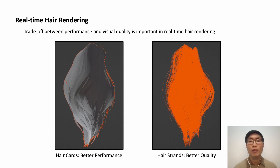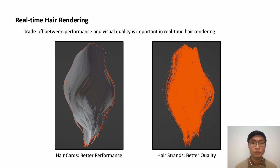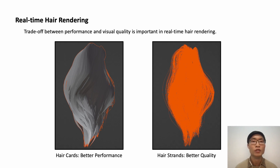Before introducing our methods, I would like to talk about some background information about real-time hair rendering. Decades ago, because of the limitation of GPU horsepower, hair is usually modeled as something called hair cards, which is basically a mesh-based structure, and it uses an opacity map to make it look like a collection of thin hair fibers. This kind of hair modeling technique is quite simple and generally more efficient for rendering, but the visual quality isn't good enough.